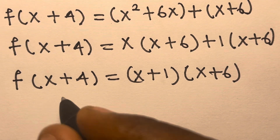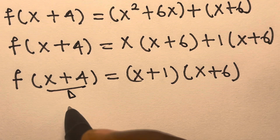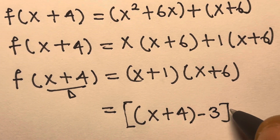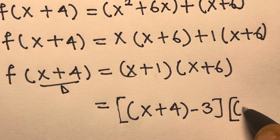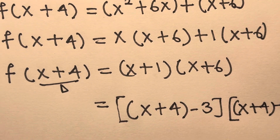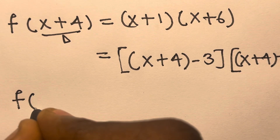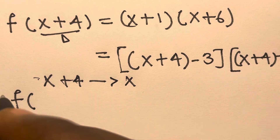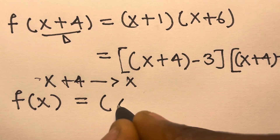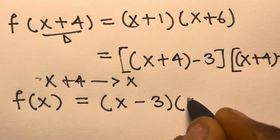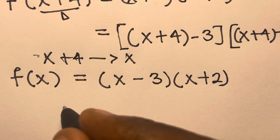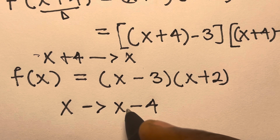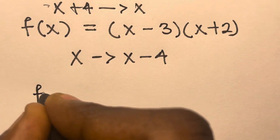We observe that x+4 acts as our domain, and we want to change the domain. So let's set x+4 equal to x — we replace x+4 with x, giving f(x) equals (x-3)(x+2). Then we substitute x tends to x minus 4, because we want to get f(x-4), so this becomes f(x-4).